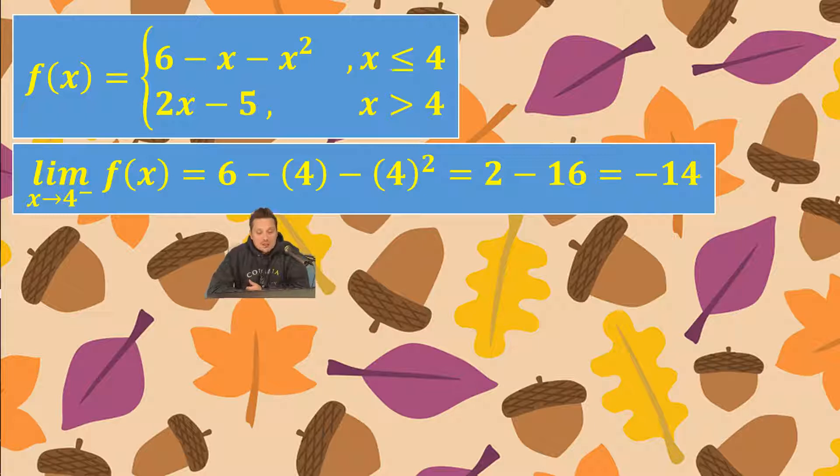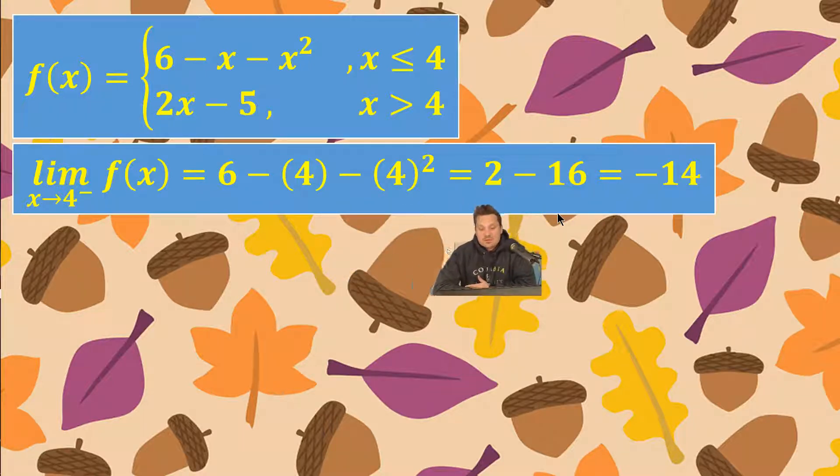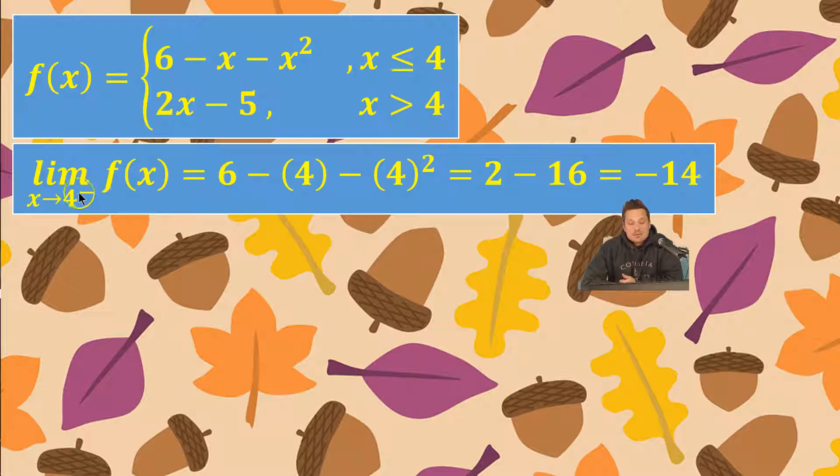I'm going to have 6 minus 4 minus 4 squared. Wherever I see x I replace it with 4. That's going to give me 6 minus 4 which is 2. 4 squared is 16 so it's 2 minus 16 which is negative 14. The limit as x approaches 4 from the left is negative 14.